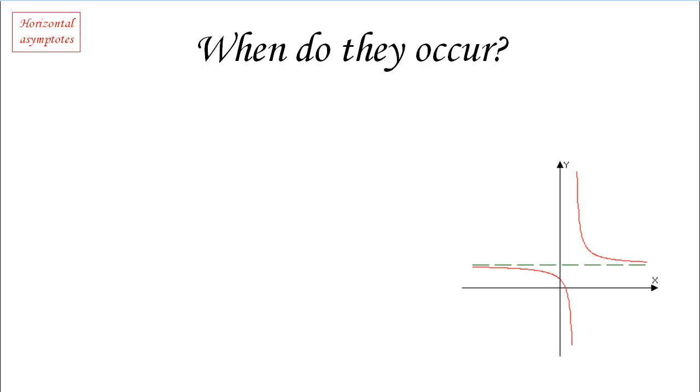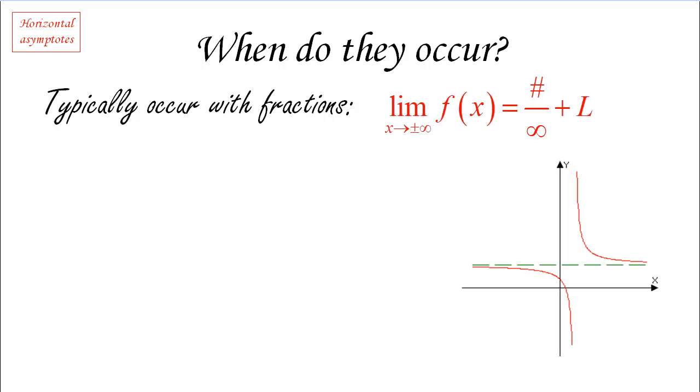When do horizontal asymptotes occur? We saw that vertical asymptotes occur very frequently with the presence of fractions. Well, the same thing happens with horizontal asymptotes. Typically, they do occur with fractions and they do occur when something like this happens.